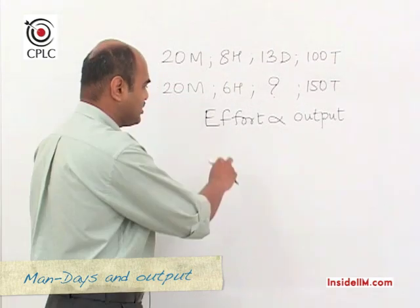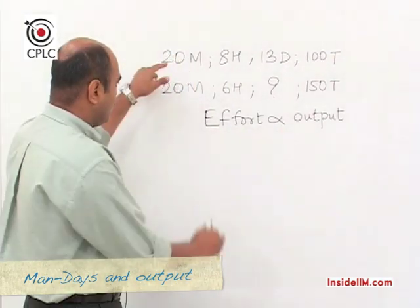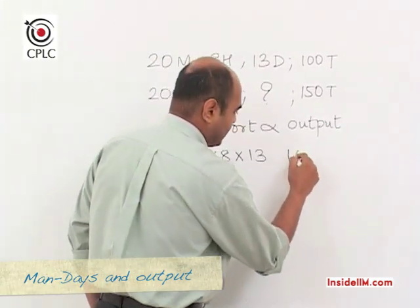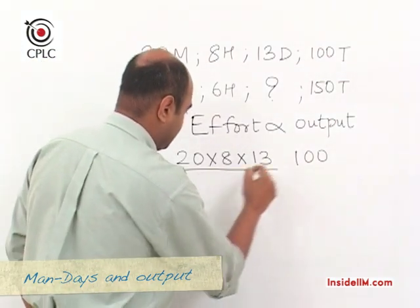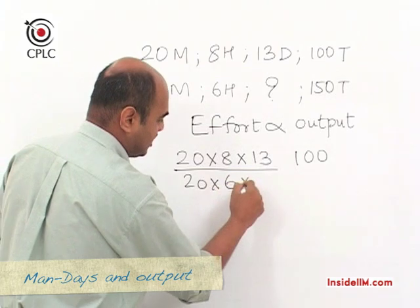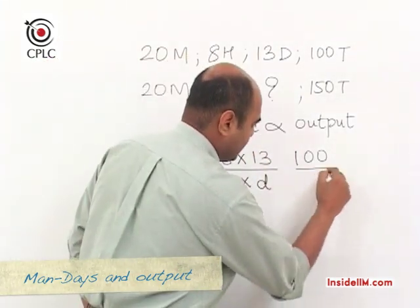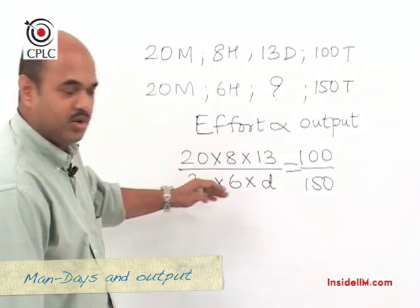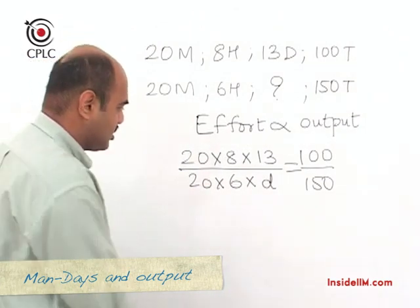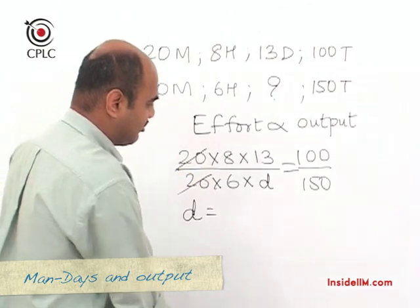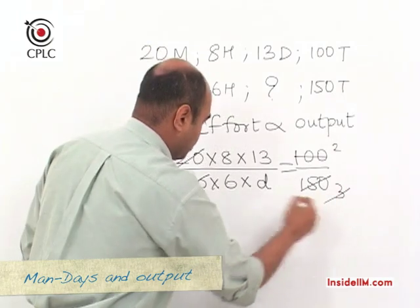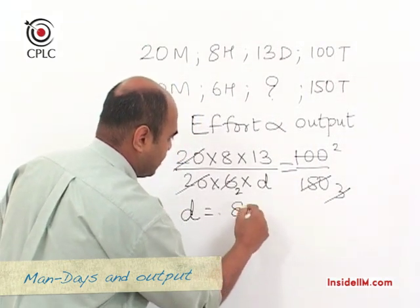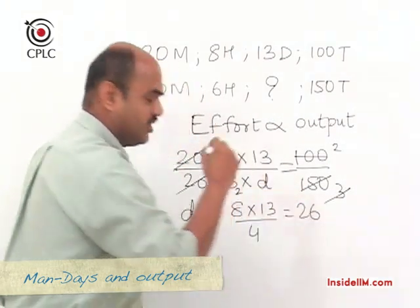In how many days can the same 20 men produce 150 toys working only 6 hours a day? Setting up the proportion: (20 × 8 × 13) / 100 = (20 × 6 × d) / 150. Cancelling 20 from both sides and solving: 8 × 13 / (2/3) gives d = 8 × 13 / 4 = 26 days.